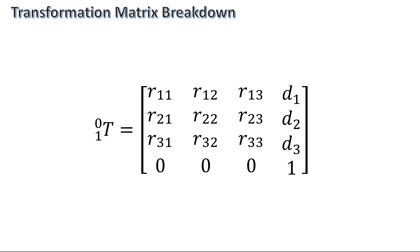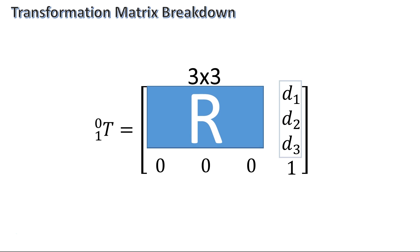Transformation consists of a 4x4 matrix. Within this 4x4 matrix, there's a 3x3 section that is reserved for rotation and a 3x1 section that is reserved for translation. The bottom row will always contain three zeros in the bottom left and a one in the bottom right.